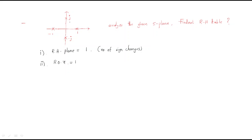If the poles on the imaginary axis are repeated, then ROZ must be two. Next, the number of sign changes below ROZ is zero, because if any sign change is available below ROZ it means another repeated pole is available. Here there is no such pole.